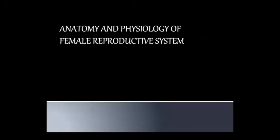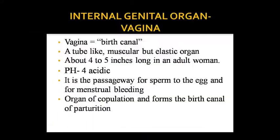Good morning class. This is our new Anatomy and Physiology class. Today we will study the second topic — anatomy and physiology of the female reproductive system, specifically the internal genitalia. In our last class we completed the external genital organs; internal genital organs we will cover now. We will study them gradually since these organs are quite large and described in a lot of detail.